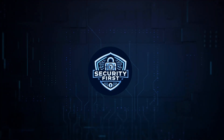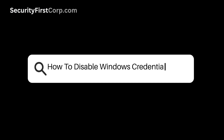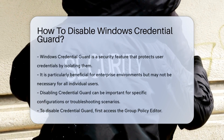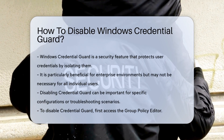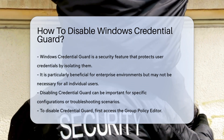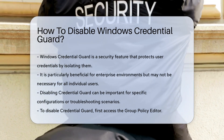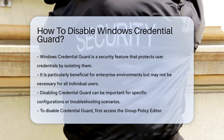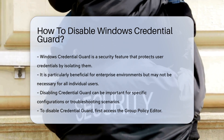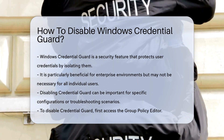Security First Corp. Safety through knowledge. How to disable Windows Credential Guard. Windows Credential Guard is a security feature designed to protect user credentials by isolating them in a secure environment. This feature is beneficial for enterprises but may not be necessary for all users. Disabling it can be important for specific configurations or troubleshooting.